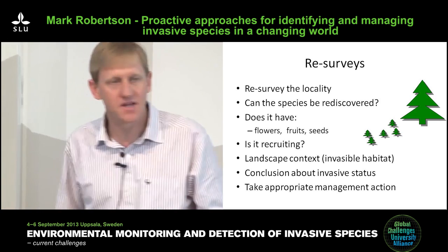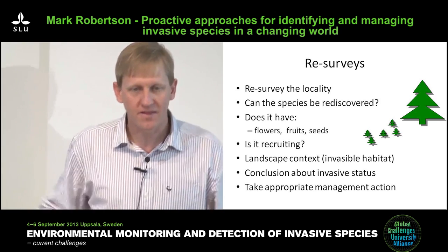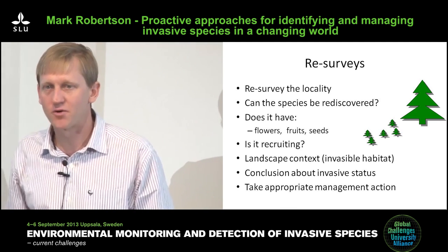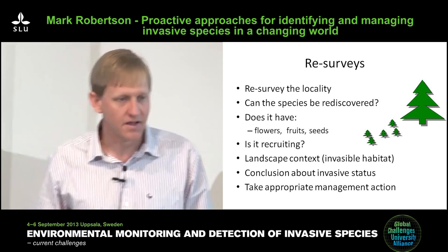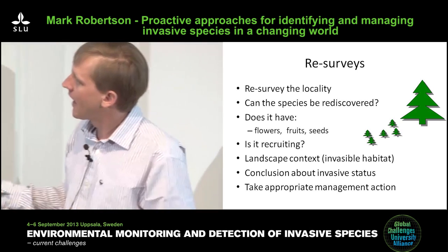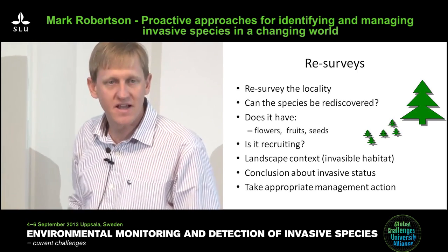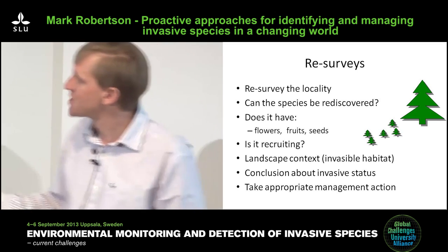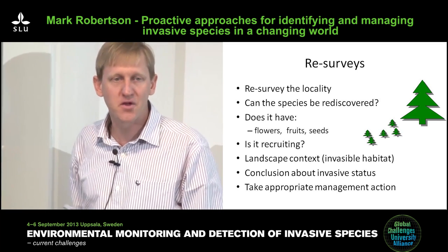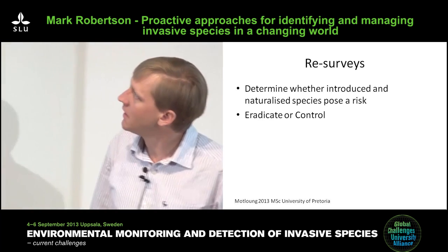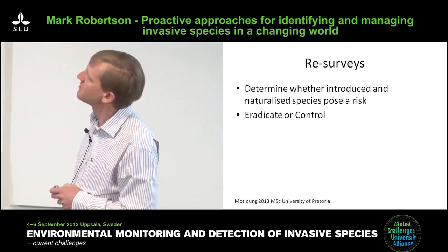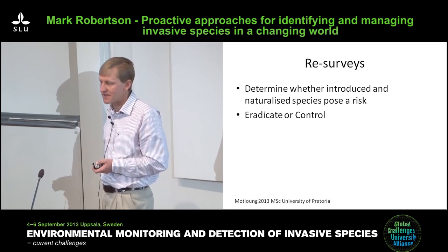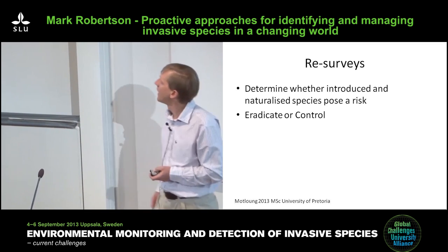Consider the landscape context: is this a street tree in a highly managed setting unlikely to spread, or is it growing on the outskirts of a town where there's disturbance and habitat it could invade? You can draw a conclusion about its invasive status based on what it's doing in that environment and take appropriate management action. The aim is to determine whether introduced and naturalised species pose a risk, then implement eradication or control based on these re-surveys.